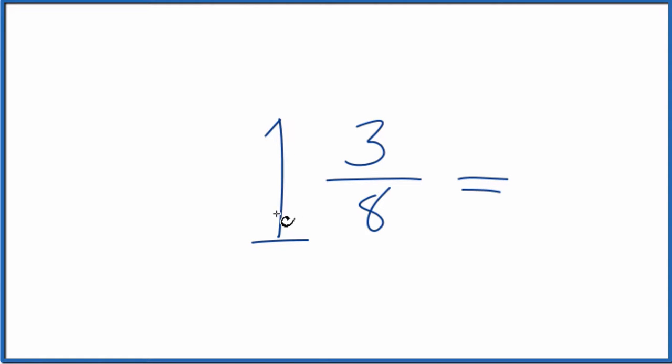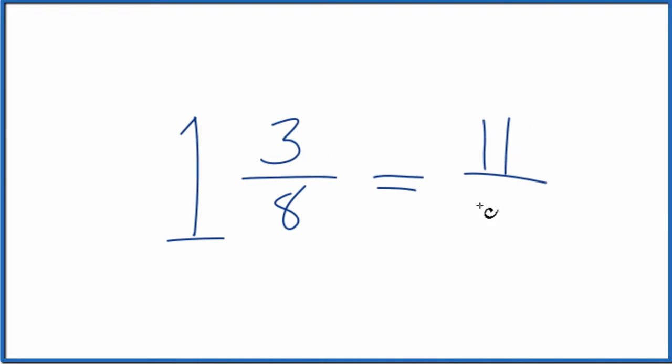We take the whole number, 1, multiply it by the denominator. 1 times 8 is 8. Then we add that to the numerator. So 1 times 8 is 8 plus 3, that gives us 11, and we just put that over 8.